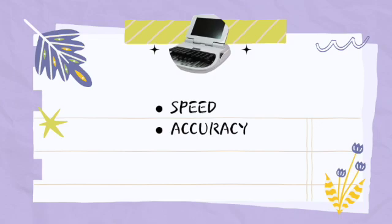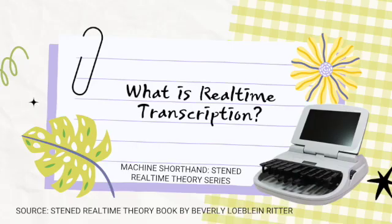In machine shorthand or machine stenography, speed and accuracy are very important. Speed — because when dictation comes, you must keep up verbatim with the pace at which words are being spoken. Accuracy — because if words are typed incorrectly there can be negative consequences, especially in court where the transcript is a legal document. Whatever you type must be the accurate verbatim words, including the emotions of the person speaking — whether it's the defendant, the witness, or the lawyers.